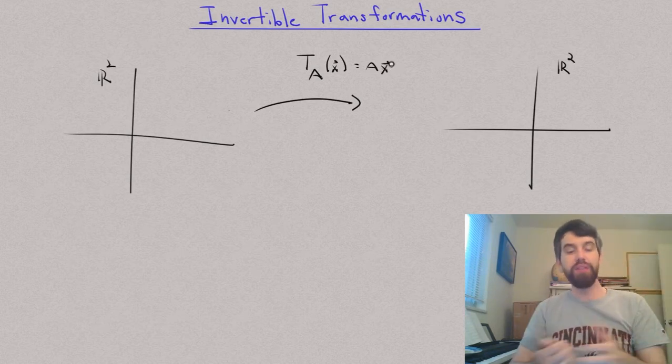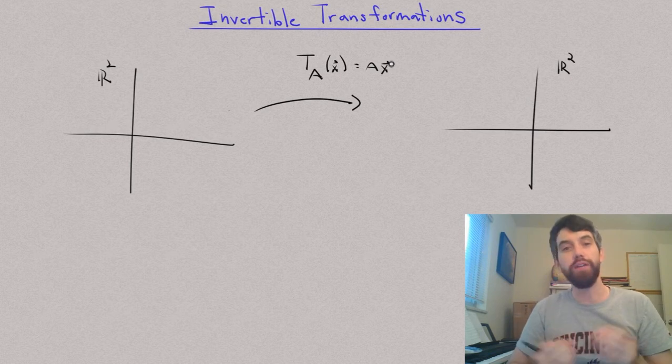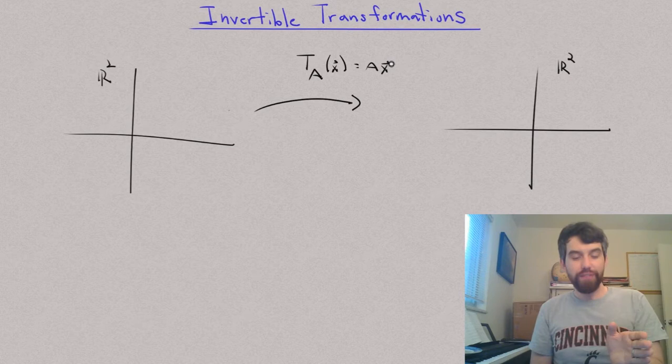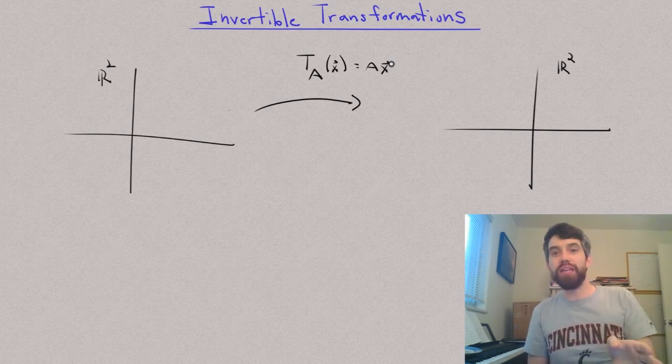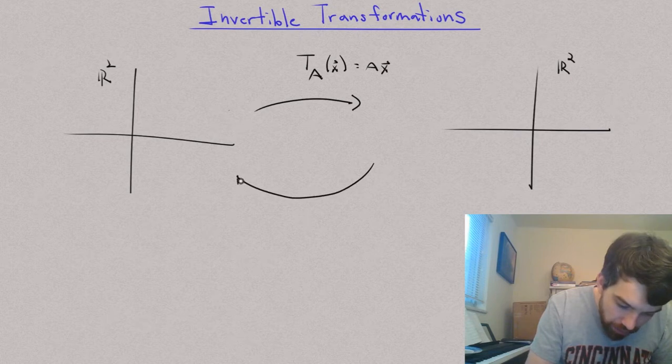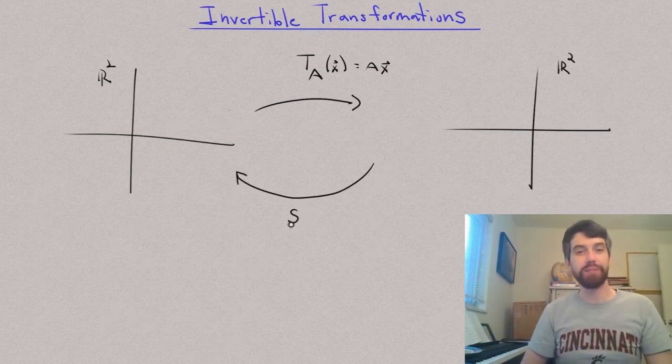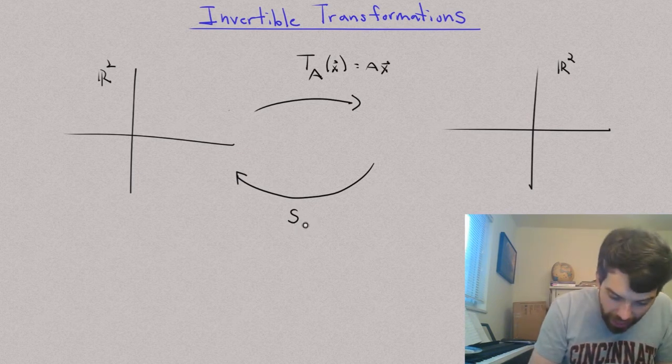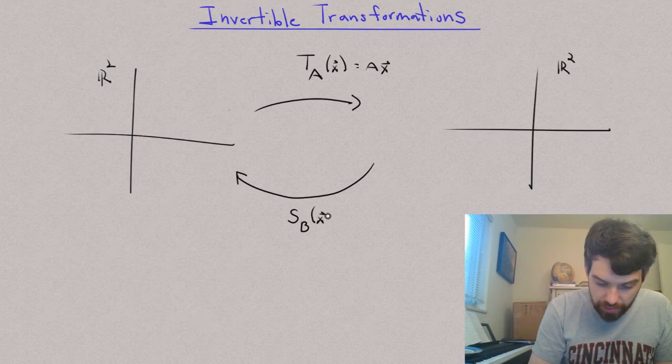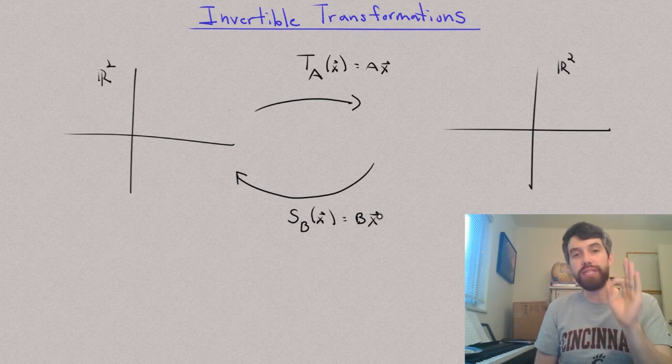Now, what does it mean for this transformation to be invertible? Well, the idea is this. If I've got one transformation from my domain to my codomain, I can go also the other way around and I can have some other transformation that I will call S and it has some other matrix that I will call B where it operates by taking the B and multiplying it on the X.